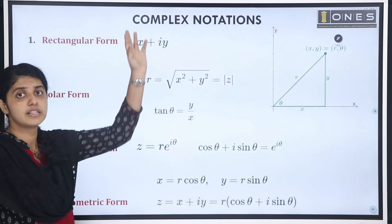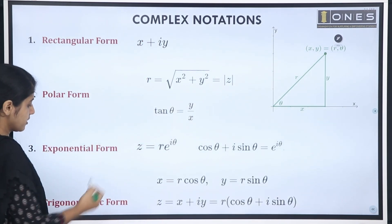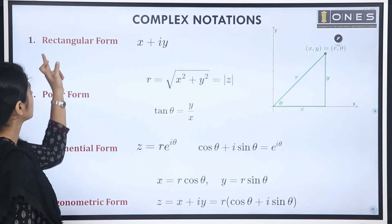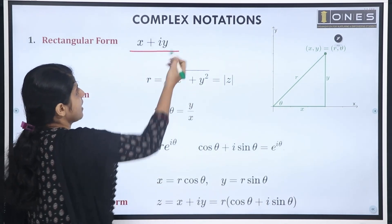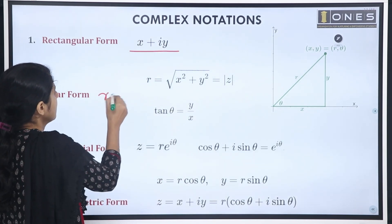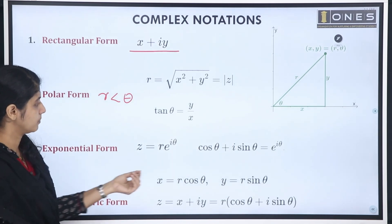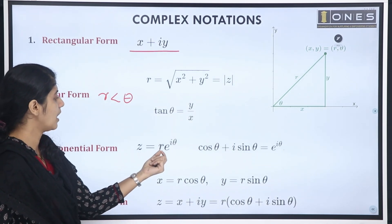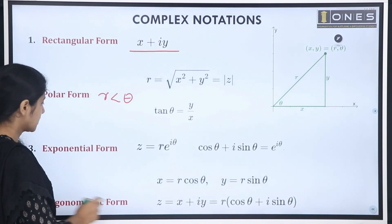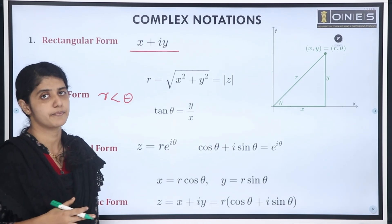For complex notations, the main forms are: rectangular form (x plus iy), polar form (r angle theta), exponential form (r e raised to i theta), and trigonometric form (r cos theta plus i sin theta). These are the four representations, and one form can represent any other.